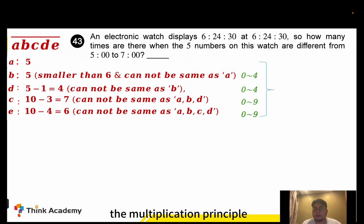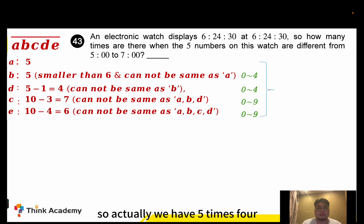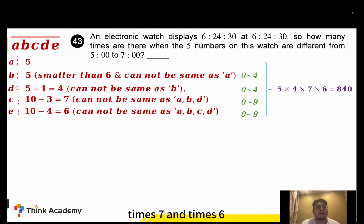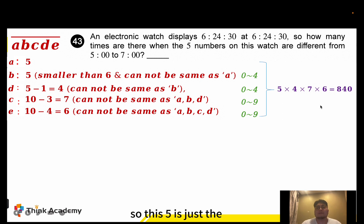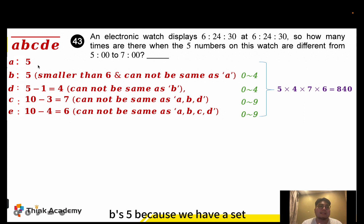Using the multiplication principle for the case A equals five, we get five times four times seven times six equals 840 choices.